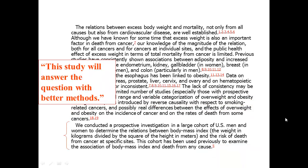Then they get to the statement of their question: 'we conducted a prospective investigation in a large cohort of US men and women to determine the relations between body mass index and the risk of death from cancer at specific sites.' This states both the aim and their approach — a prospective investigation in a large cohort. They note this cohort has been used previously, they're looking at BMI rather than arbitrary categories, covering all cancers, and their investigation is prospective — all improvements on previous studies.